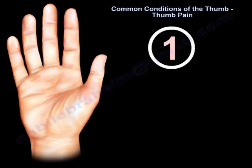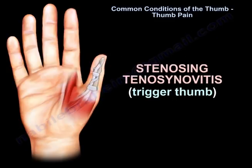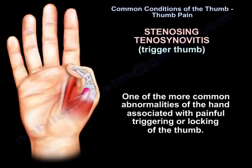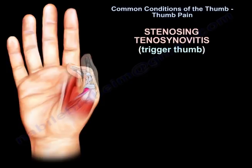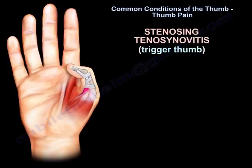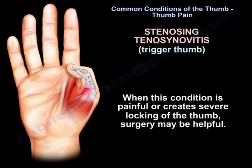Stenosing tenosynovitis, which is called trigger thumb, is one of the more common problems of the hand. It is associated with painful triggering or locking of the thumb. When the patient tries to straighten the thumb, the nodule jams beneath the pulley proximally. When this condition is painful or creates severe locking of the thumb, surgery may be helpful.